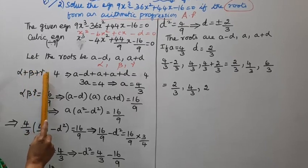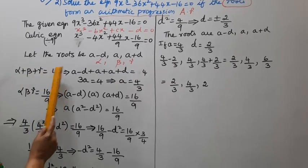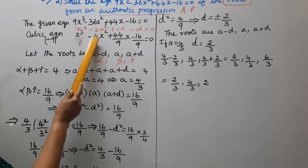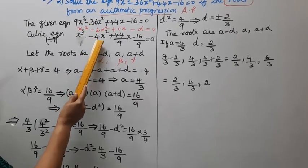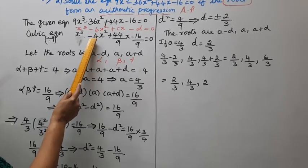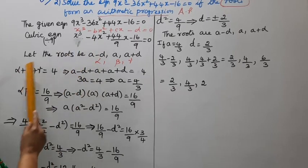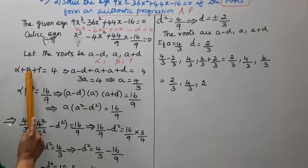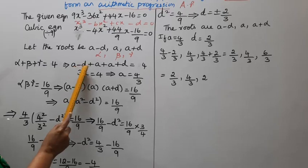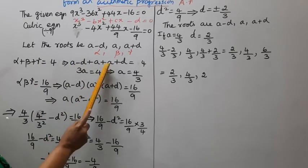Alpha plus beta plus gamma equals b. Comparing with the equation, alpha plus beta plus gamma equals minus of minus 4, which is 4. So alpha is a minus d, beta is a, and gamma is a plus d.